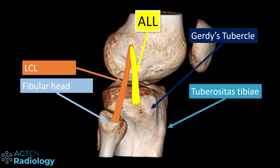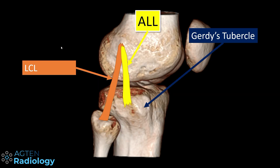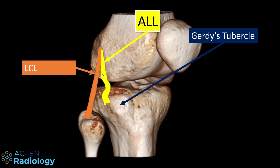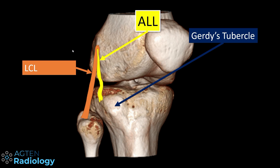The anatomic description is summarized in this illustration showing the fibular head, tibia, femur, Gerdy's tubercle, and the tibial tuberosity. The ALL in yellow has a similar origin to the LCL — a little bit more anteriorly and distally — but on MRI it's not separable. The ALL runs anteriorly and inserts about midway between Gerdy's tubercle and the fibular head.